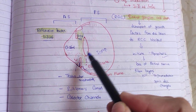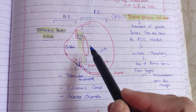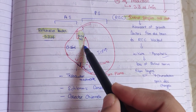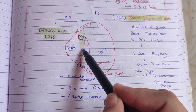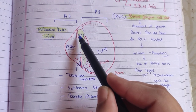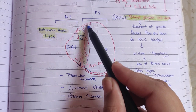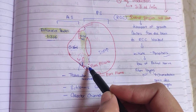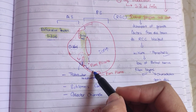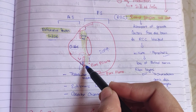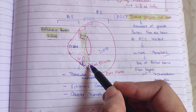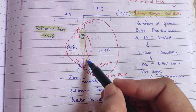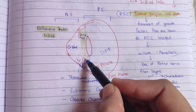Before that, let us look at how normal aqueous drainage happens. This is the posterior segment and this is the anterior segment. The green color shown is the posterior chamber and this is the anterior chamber. This is the iris, pupil, and this is the ciliary body. The pars plana is the first part of the ciliary body. Its ciliary processes produce aqueous humor, which drains from the posterior chamber into the anterior chamber through the gap between the iris and lens.